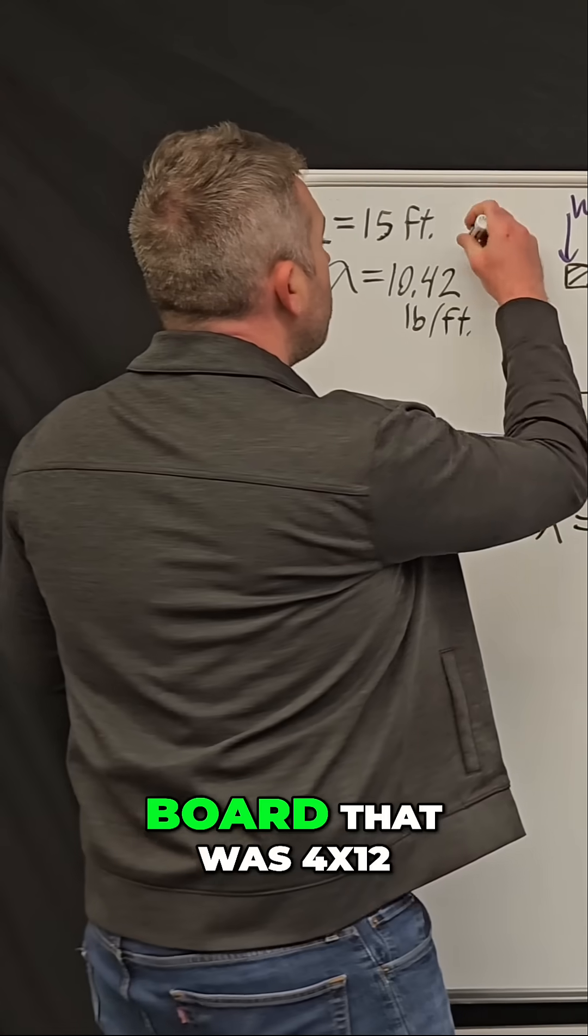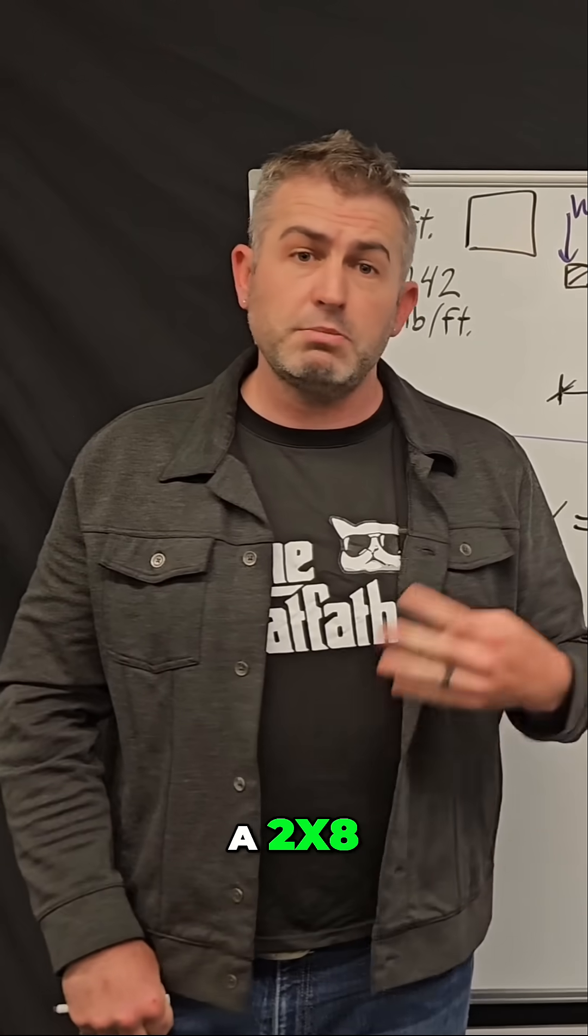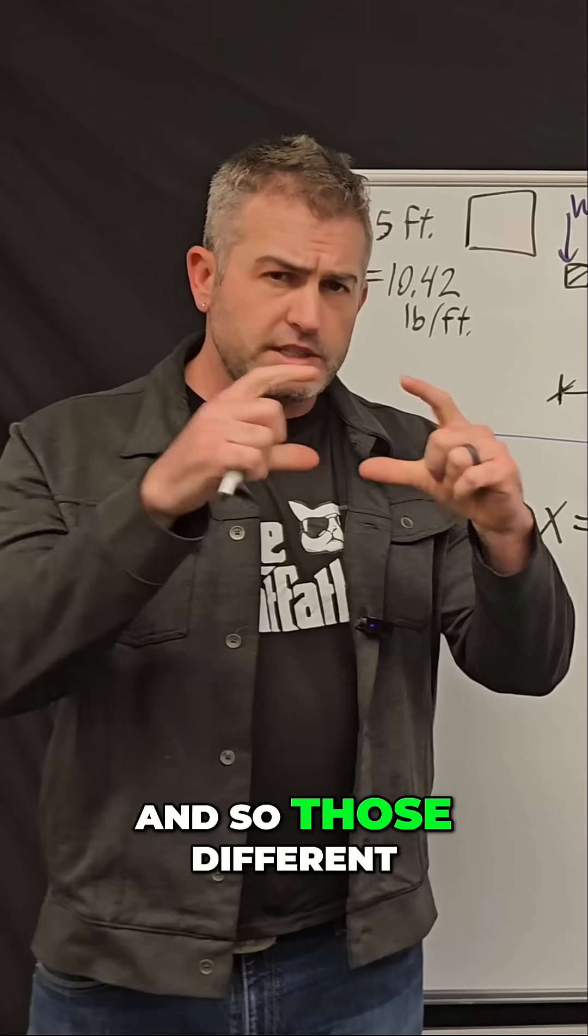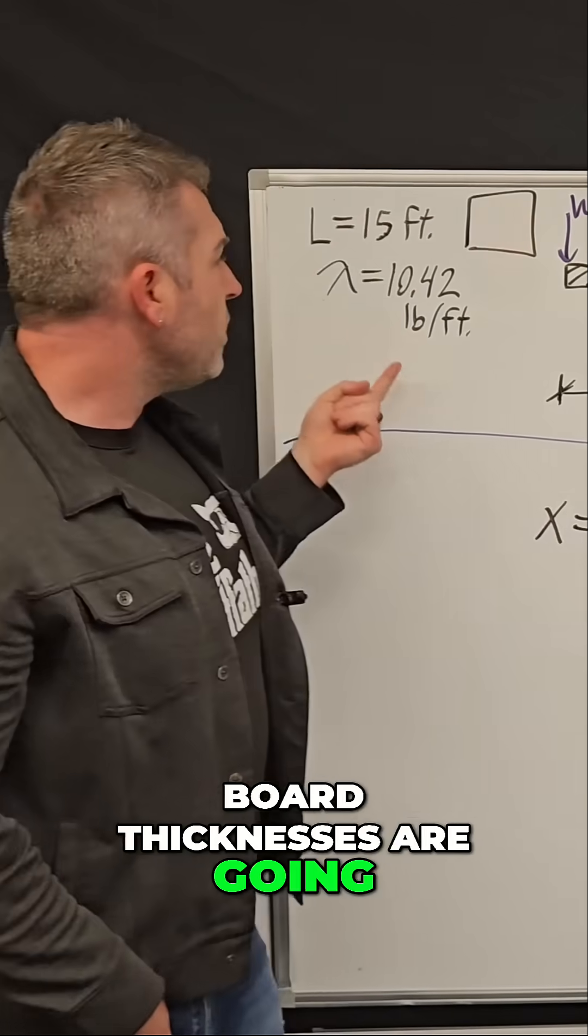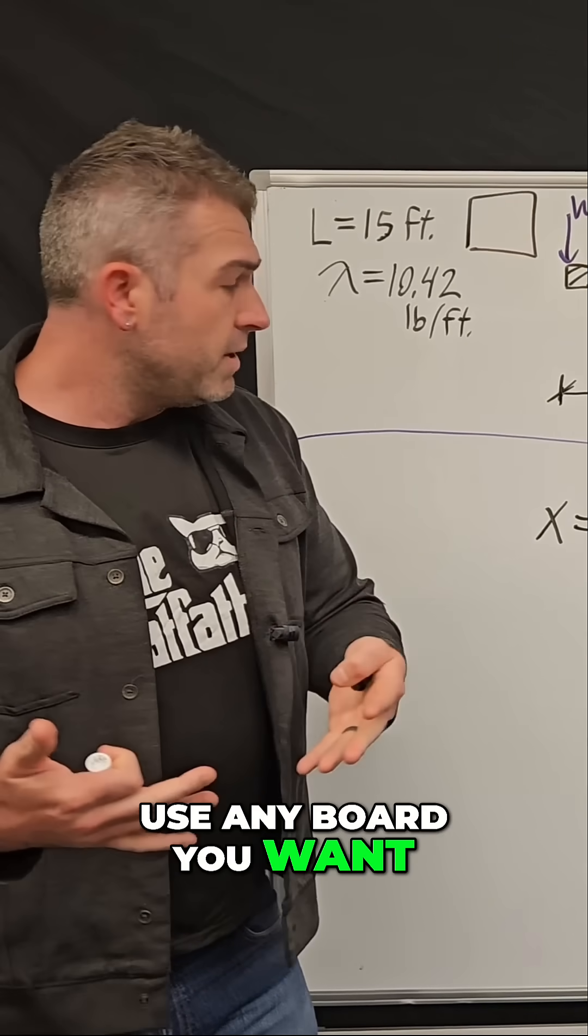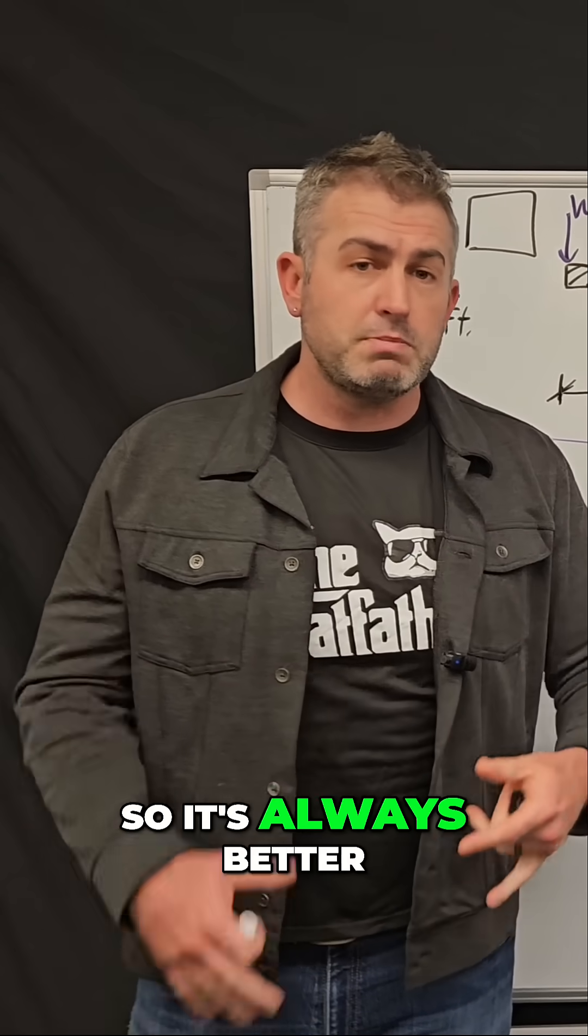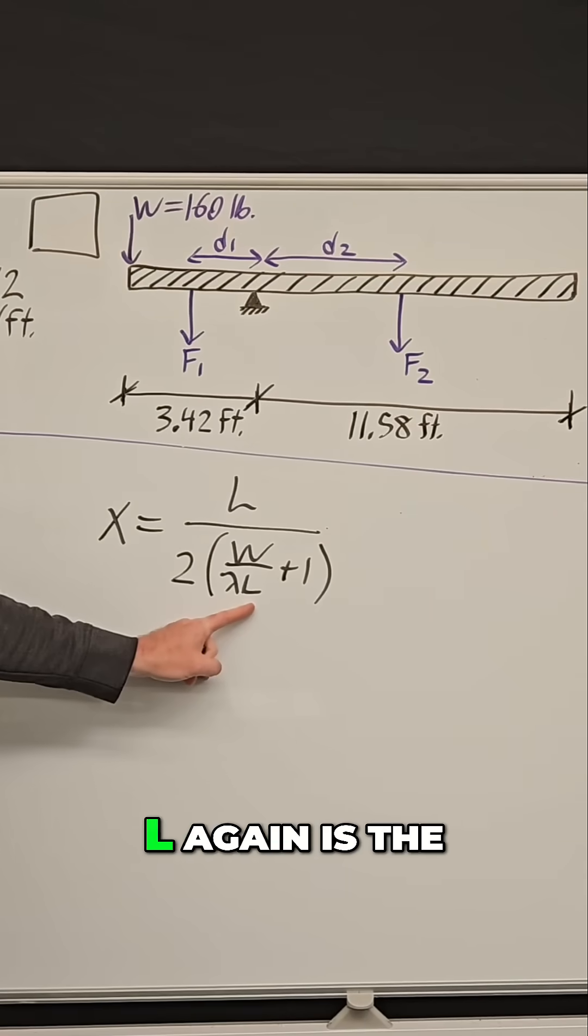I had a board that was 4 by 12, but you could have a 2 by 12, a 2 by 8, a 2 by 10. Those different board thicknesses are going to have different unit weights. So you could really use any board you want, but of course you want Lambda to be as big as possible. So it's always better to use a thicker, more heavy board. And that will give you a bigger value here.